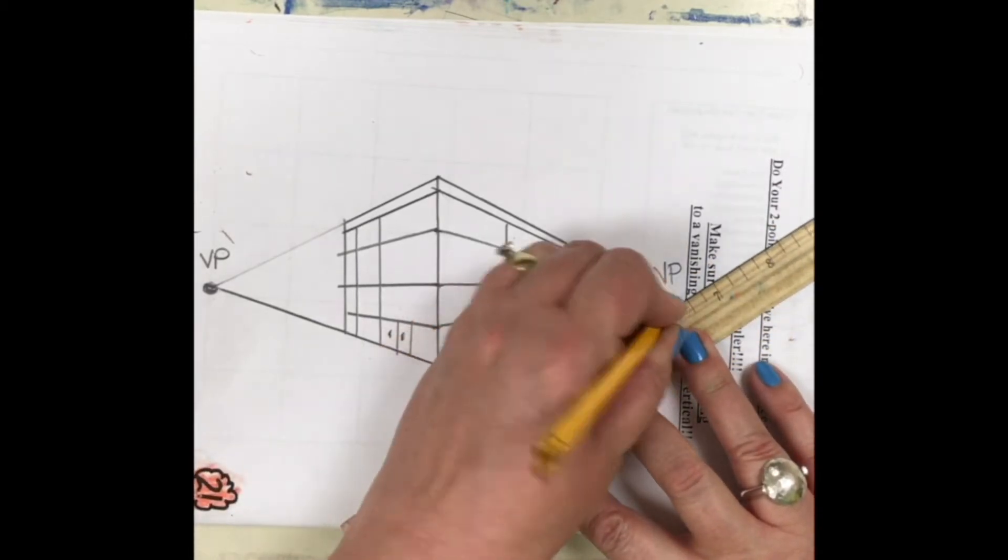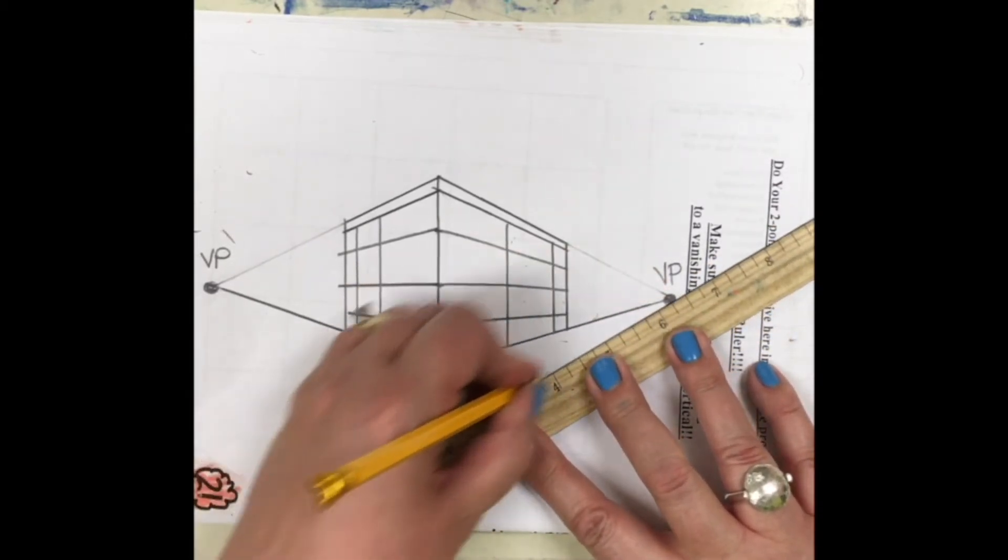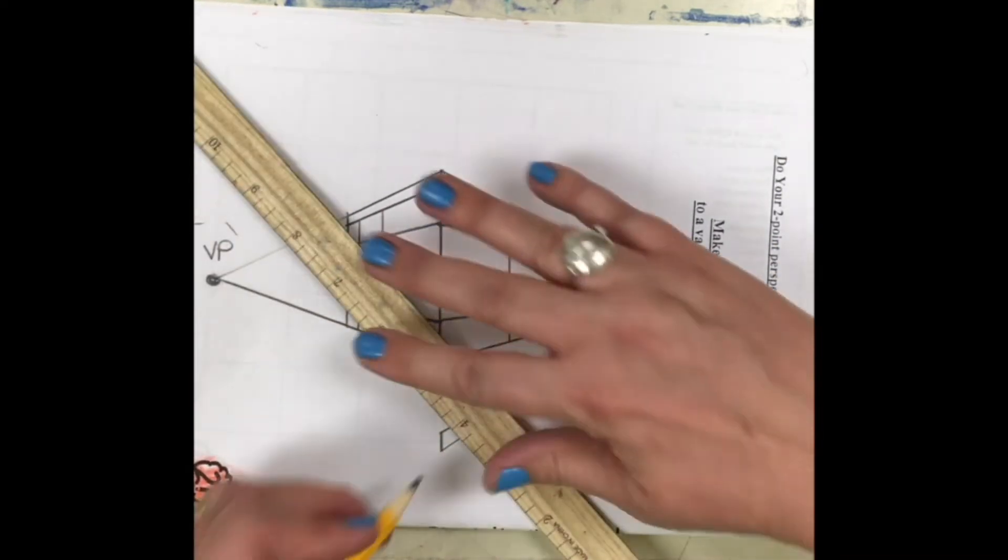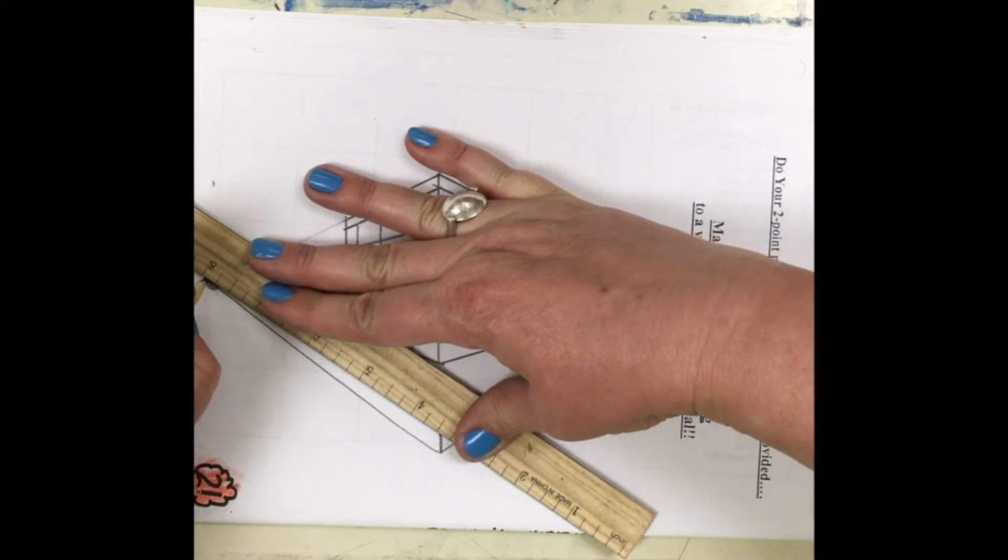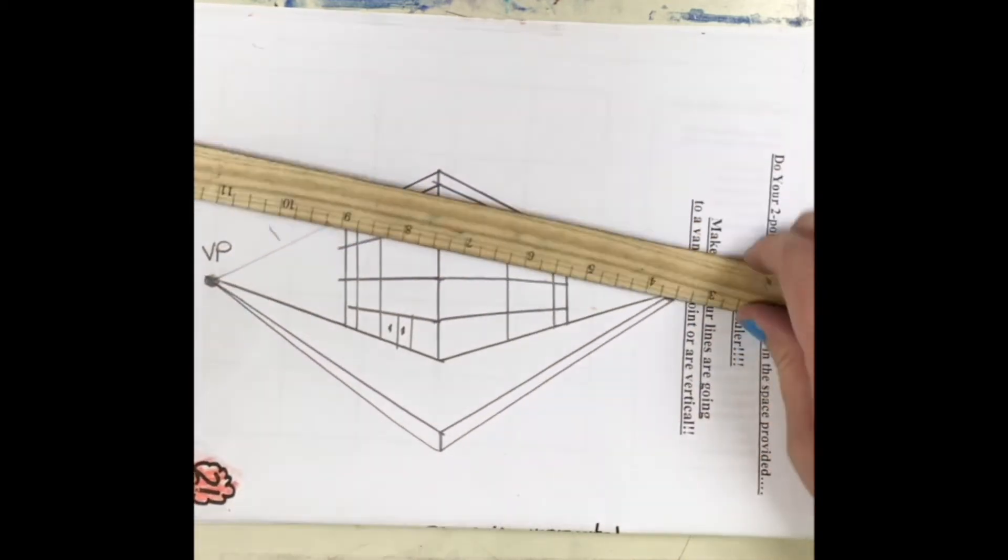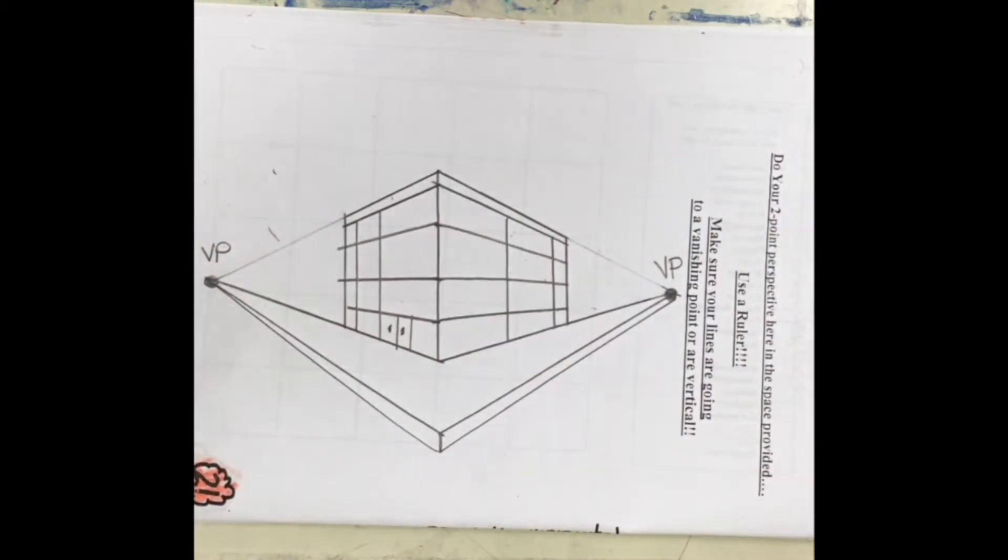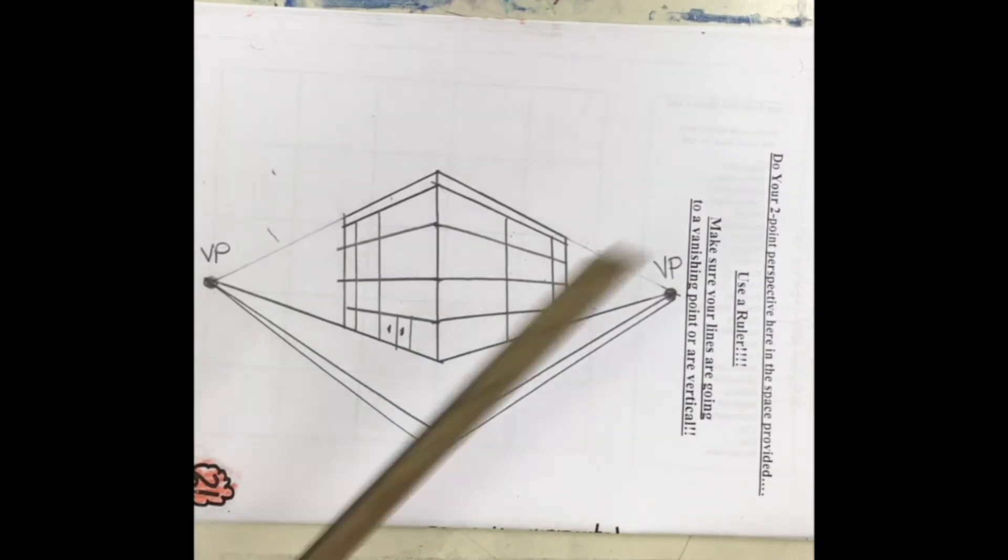Then we're going to go to the vanishing point, go to the vanishing point, go to the vanishing point, go to the vanishing point. Now I need some detail on my sidewalk, right? So sidewalks have what on them? Lines, yes, lines.